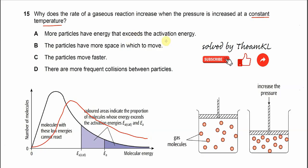Option B: The particles have more space in which to move. Because it said the pressure increases, this means the space is actually less. Pressure increased means volume becomes smaller, right? So B is also not correct.